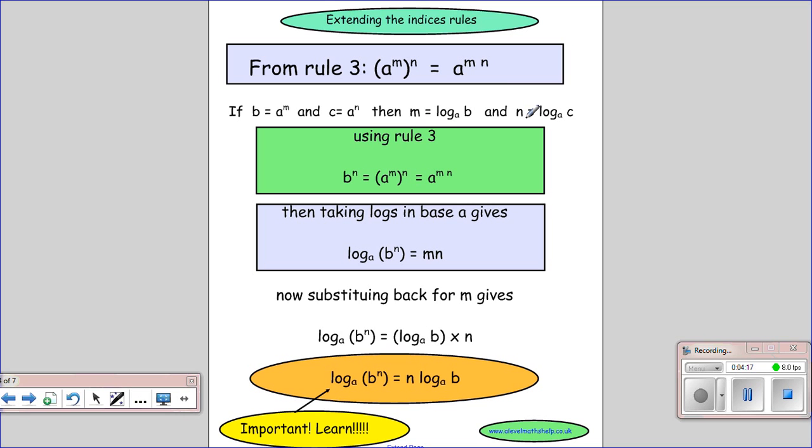So the third rule comes from taking a power of a power, again, extending the indice rules. So if we have a to the power of m, all to the power of n, it's the same as a to the power of m times n.